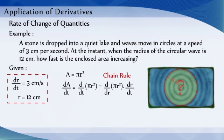Now, d/dr of πr² is 2πr. dr/dt is given as 3 cm per second and radius is given as 12 cm. Substituting the corresponding values, we get dA/dt = 2π(12)(3), which equals 72π.